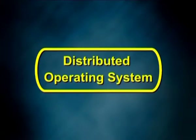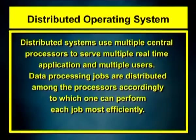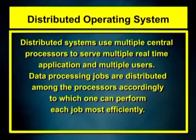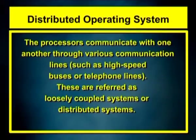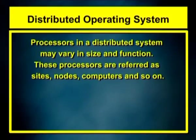Number 3 – Distributed Operating System. Distributed systems use multiple central processors to serve multiple real-time applications and multiple users. Data processing jobs are distributed among the processors according to which one can perform each job most efficiently. The processors communicate with one another through various communication lines such as high-speed buses or telephone lines. These are referred to as loosely coupled systems or distributed systems. Processors in a distributed system may vary in size and function and are referred to as sites, nodes, computers, and so on.